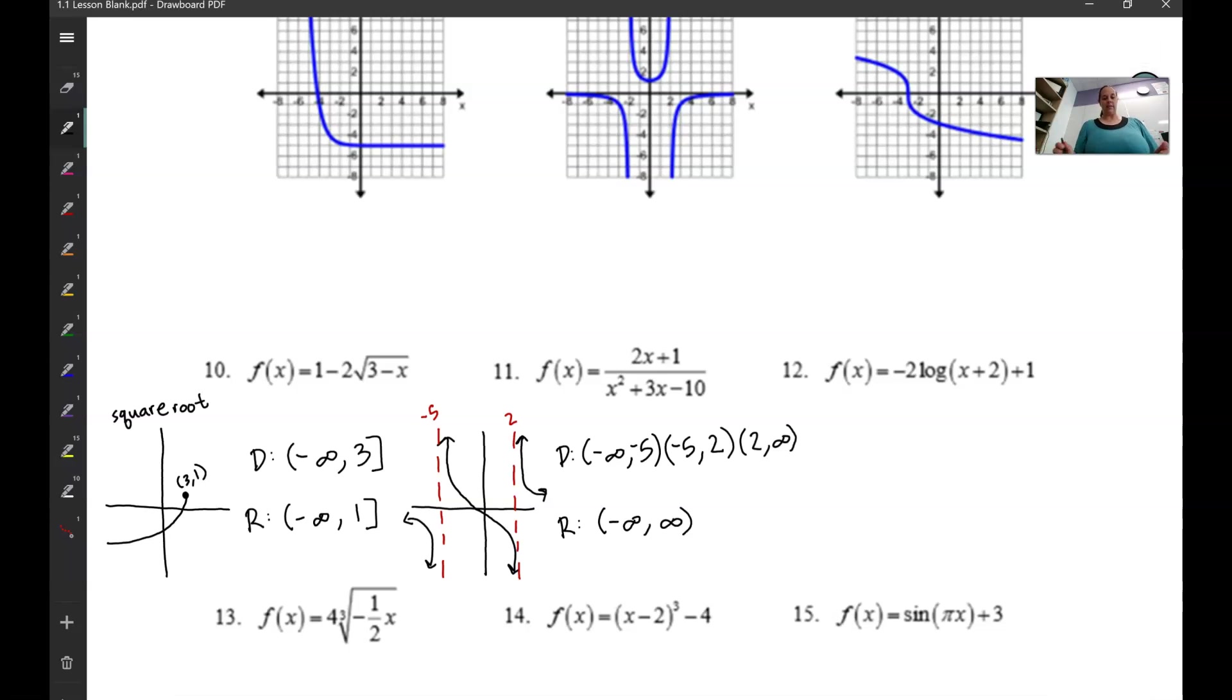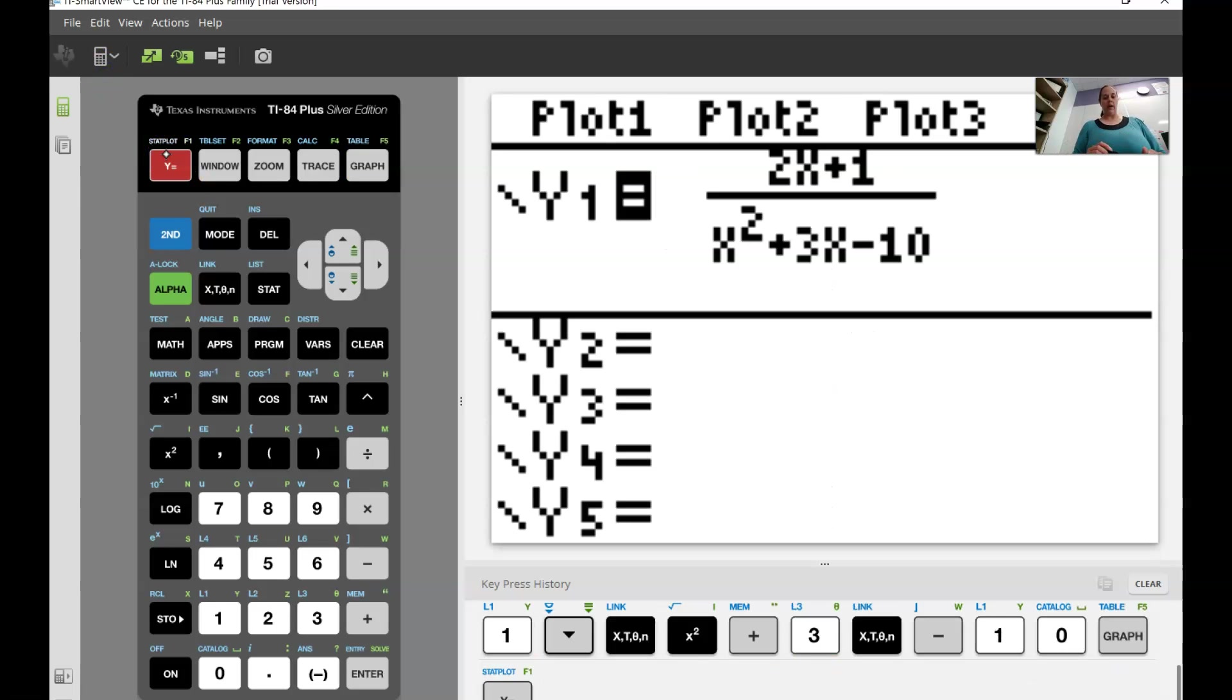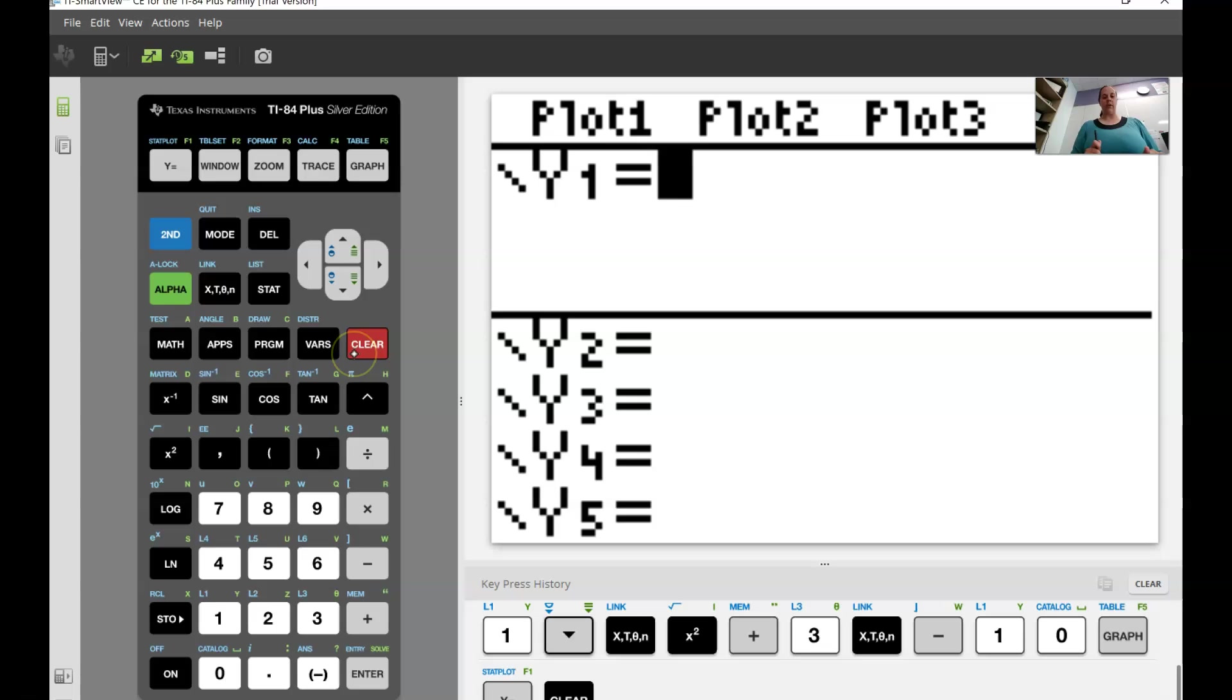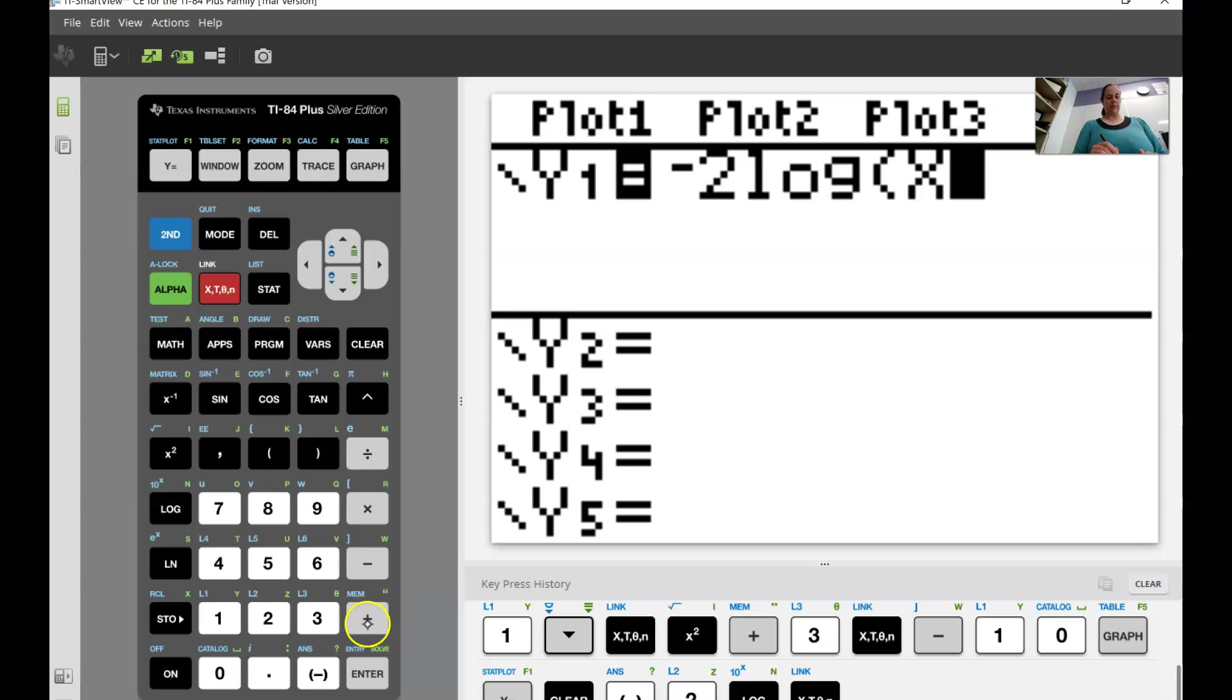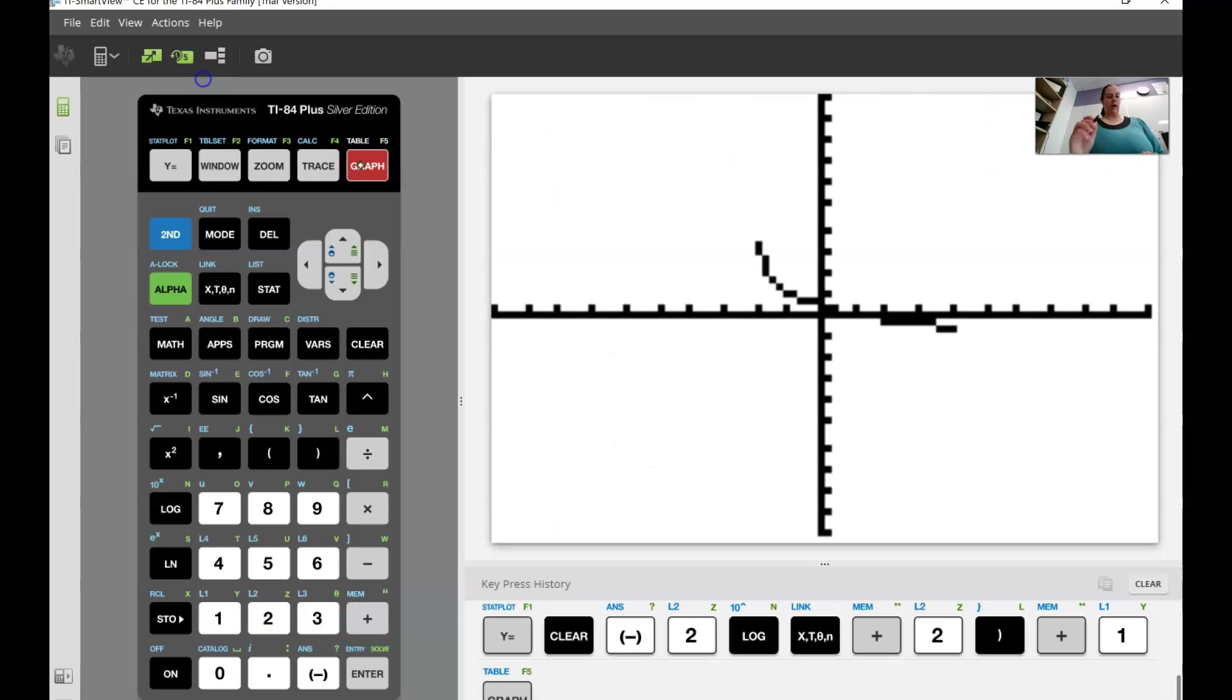Okay, last one we're going to do as a class, number 12. Go back to our graphing calculator. Go to y equals. Clear it. And let's type in number 12. We've got negative 2. Then in your calculator we'll have a log button. Then x plus 2, end my parentheses, plus 1. Graph. And we've got this one.